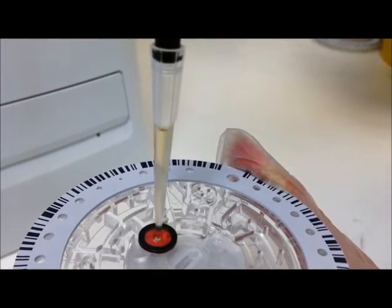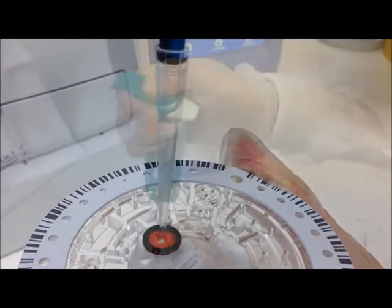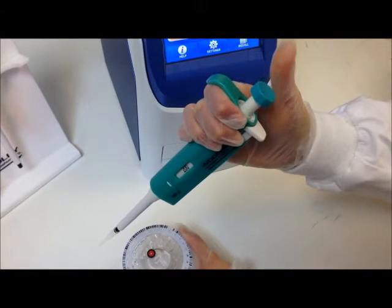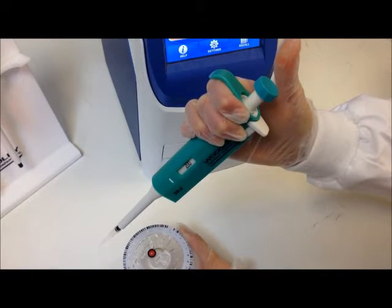Gently push down on the plunger at the top of the pipette to the stop position. All of the sample should have been expelled into the sample chamber. Keeping the plunger held down, gently remove the pipette from the sample port. The plunger may now be released.